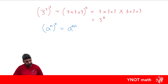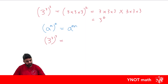We could have done that straight away: (3³)² — we have a power to a power, so we just multiply those powers together: 3 × 2 = 6, giving us 3 to the power of 6. When you have a power raised to a power, simply multiply the powers together.